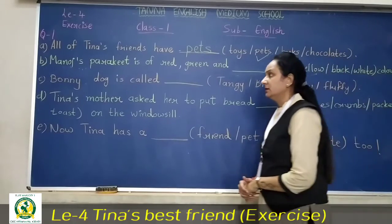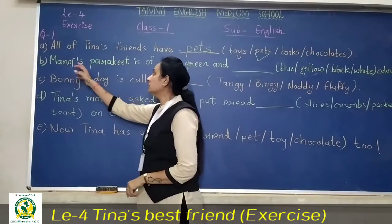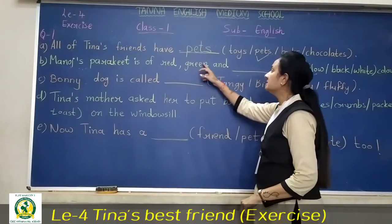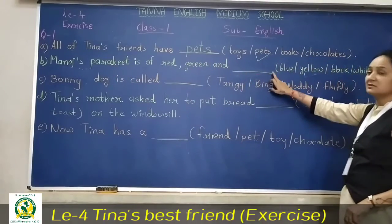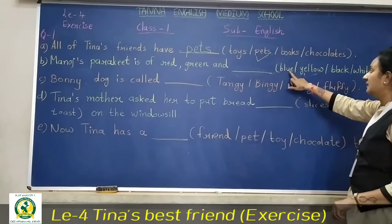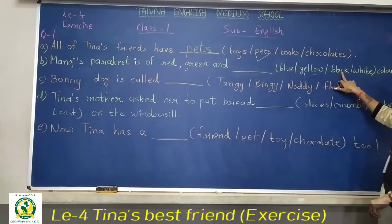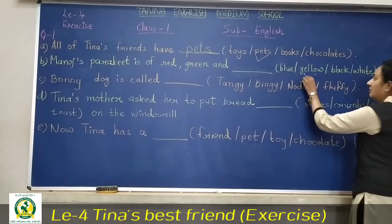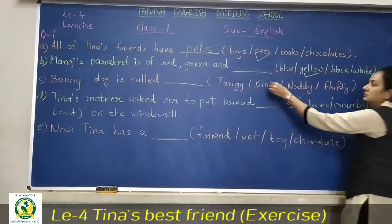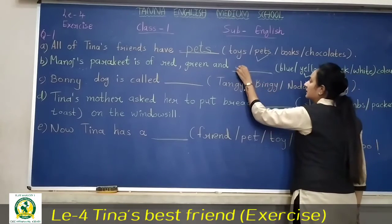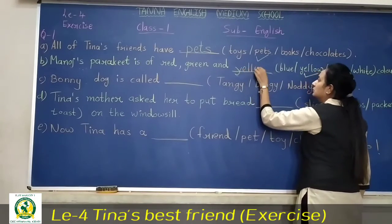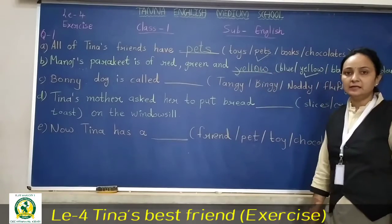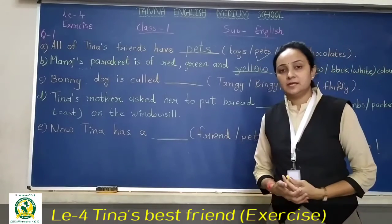Okay, now second is: Mano's pencil box is off. Red, green, and... konse color tha? Uska board konse color tha? Blue, yellow, black, or white? Yes, it is yellow color. So here we have to write yellow. Y-E-double L-O-W, yellow.